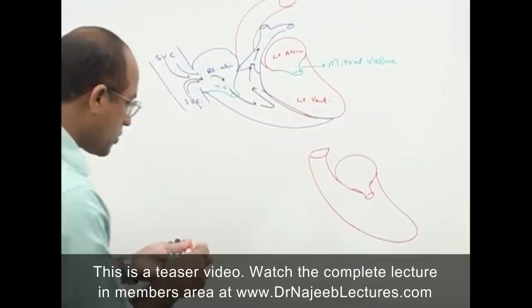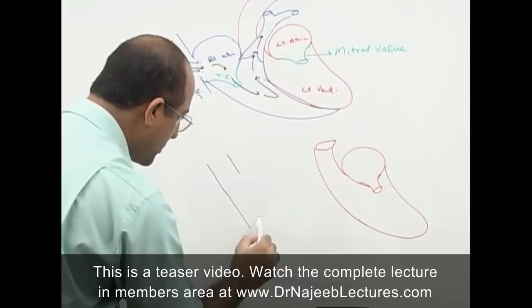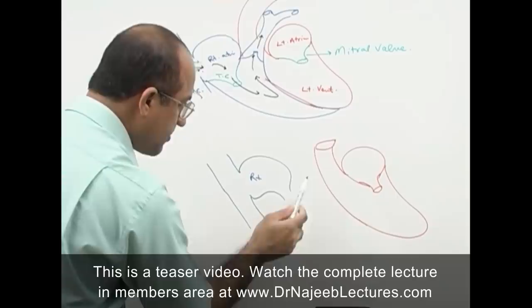From the right atrium, through the tricuspid valve, blood goes to the right ventricle, and from the right ventricle it goes out into the pulmonary artery. The input valves for the ventricles are the mitral valve on the left side and the tricuspid valve on the right side.